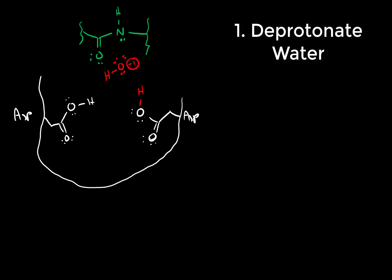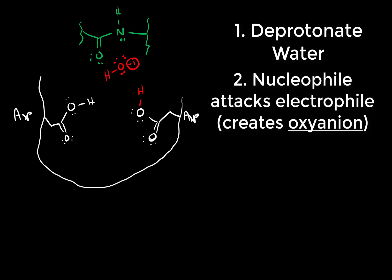Once we've made hydroxide, we now have a really good nucleophile that can initiate the reaction by attacking the electrophilic carbon in the peptide backbone. When you attack an electrophile, we've created a new covalent bond, so we need to break a covalent bond. In this case, the electrons are drawn up onto the oxygen to break the double bond, making an oxyanion.